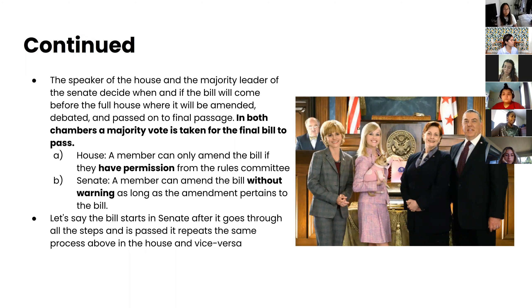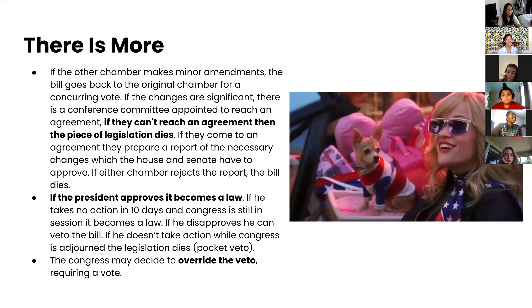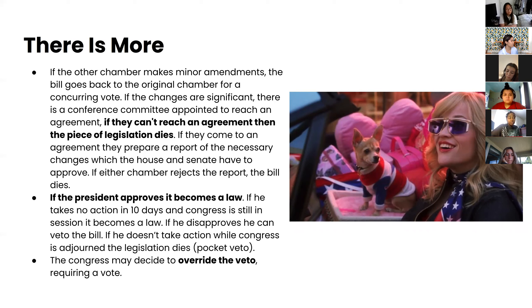The bill is amended, debated, and passed toward final passage. In both chambers, a majority vote is required for the final bill to pass. In the House, you need permission from the rules committee to make an amendment; in the Senate, you can make an amendment without warning as long as it pertains to the bill. A bill must go through both the Senate and the House of Representatives to pass. If the other chamber makes minor amendments, the bill goes back to the original chamber for a concurring vote. If changes are significant, a conference committee is appointed to reach an agreement; if they can't, the legislation dies.